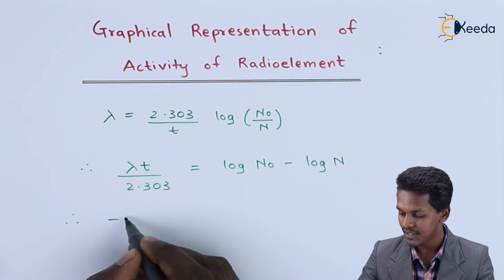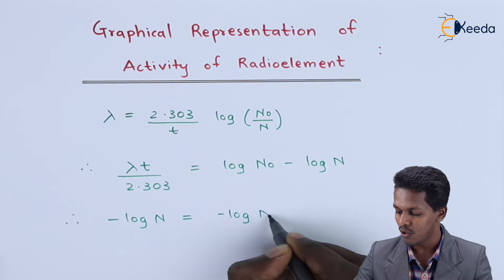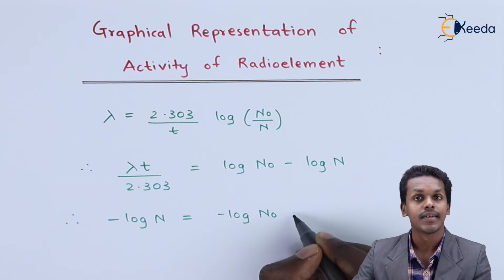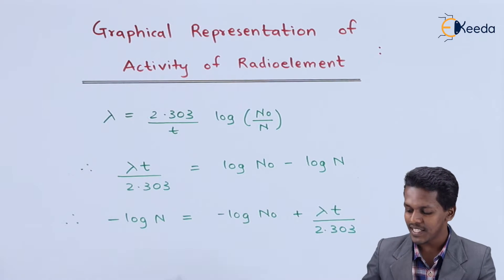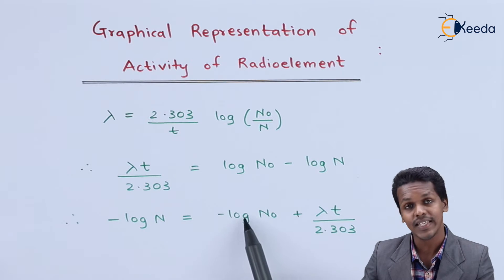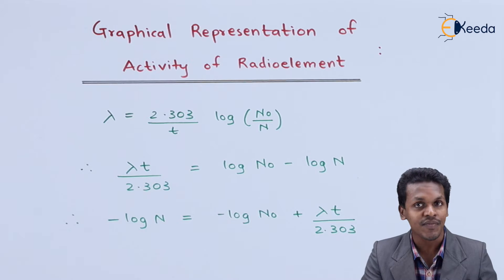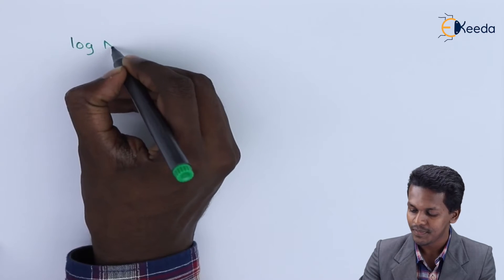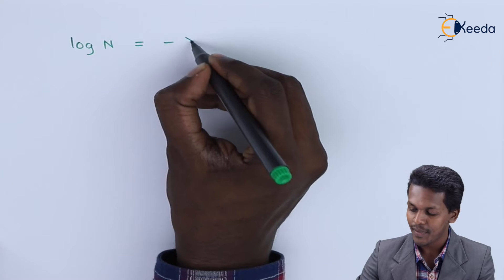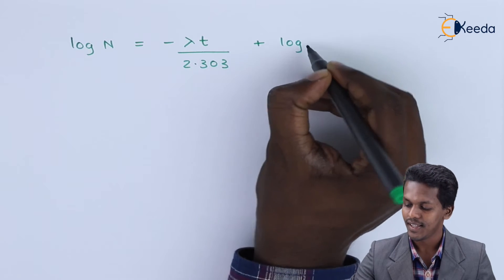So here we can simplify further by shifting terms around. Therefore this will be: minus log N equals minus log N₀ plus lambda t divided by 2.303. But since this equation should have y as a positive value — similar to y equals mx plus c — what we can do is we can multiply this whole equation by minus 1. So therefore we get: log N equals minus lambda t divided by 2.303, plus log N₀.